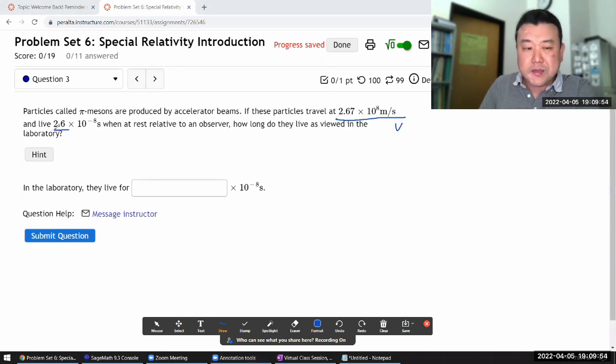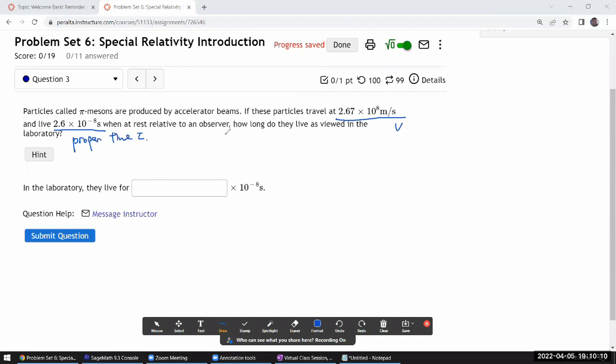This many seconds. So here this many seconds when at rest relative to an observer, so this is the proper time tau. It's the lifetime of the pi meson, the charged pi meson when it's at rest.